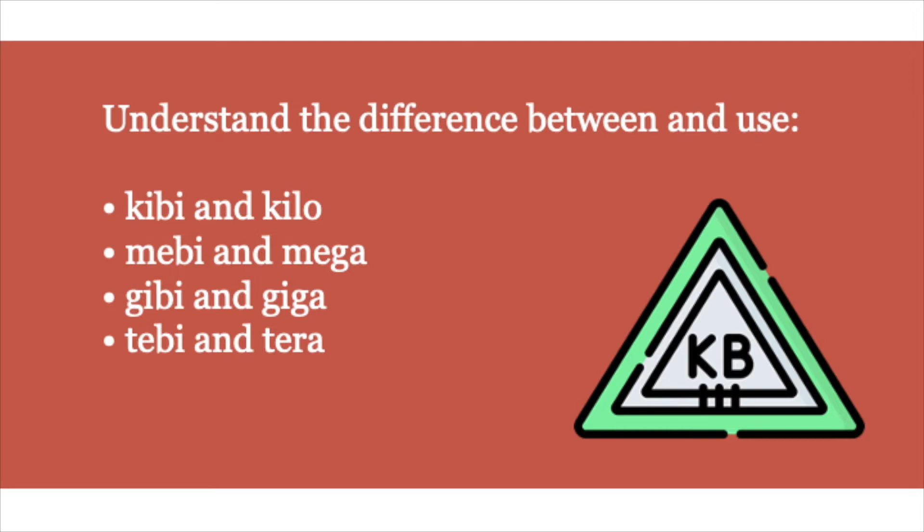At IGCSE level you probably worked with kilobytes, megabytes, gigabytes and terabytes. However, at AS level you'll find that in industry there are two terms that are used. The first aspect is the standard international units which are kilo, mega, giga and tera, and then you have the binary units kibi, mebi, gibi and tebi.